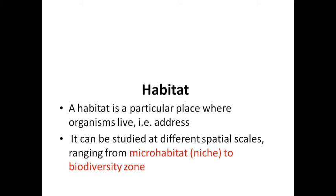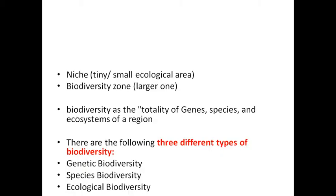Basically, habitat is an address for a particular organism or a particular group of organisms. It can be studied in different ways at different spatial scales, ranging from microscale to macroscale. Microscale habitat study is called niche and macroscale or large-scale habitat study is known as biodiversity zone. Niche is a small and tiny ecological area, while biodiversity zone is a comparatively large geographical area.